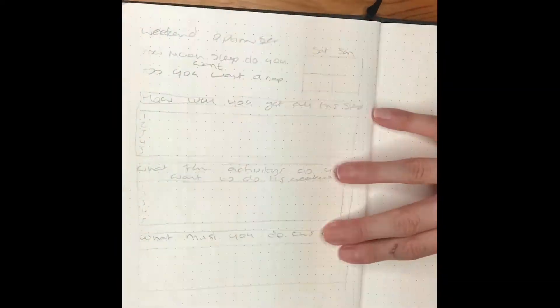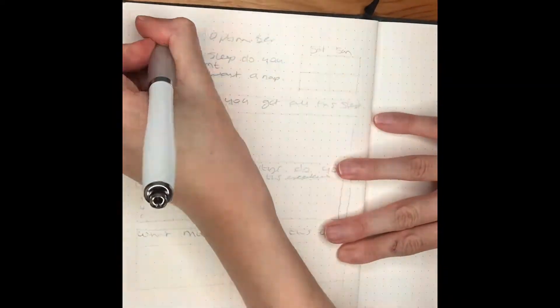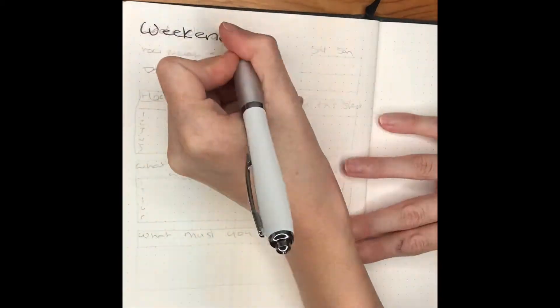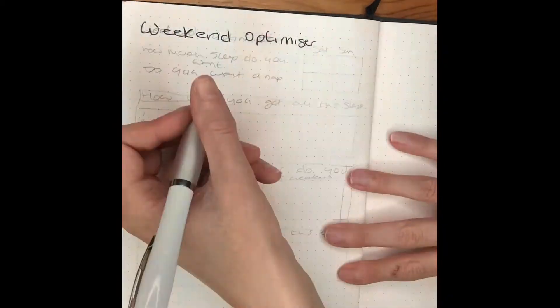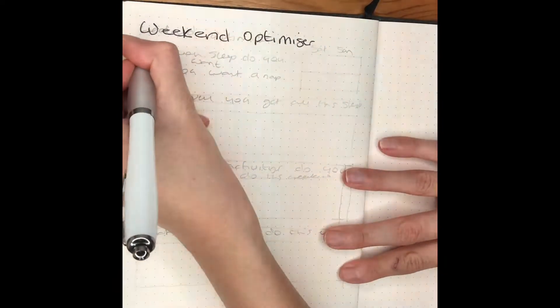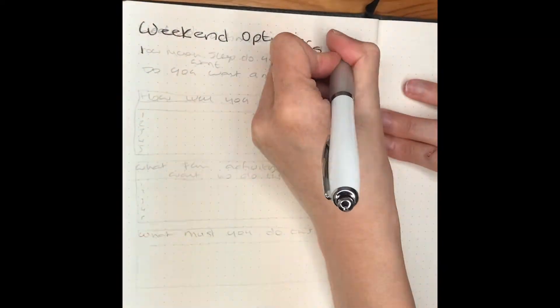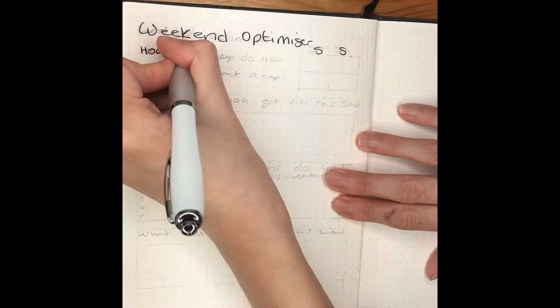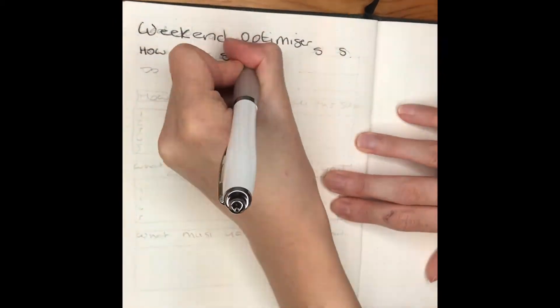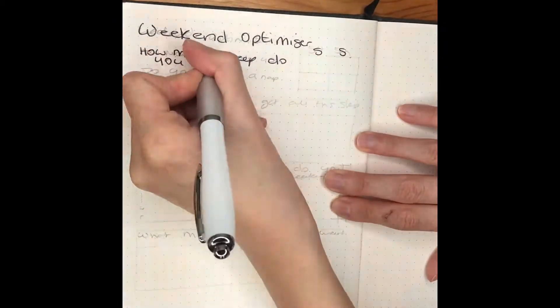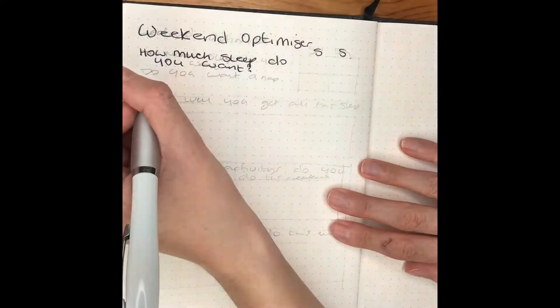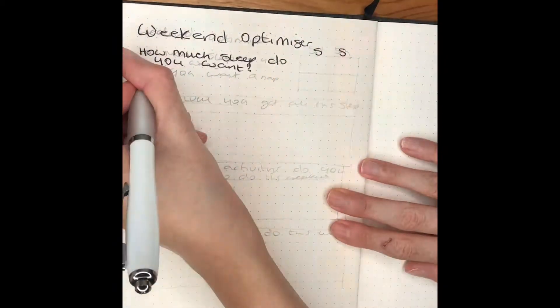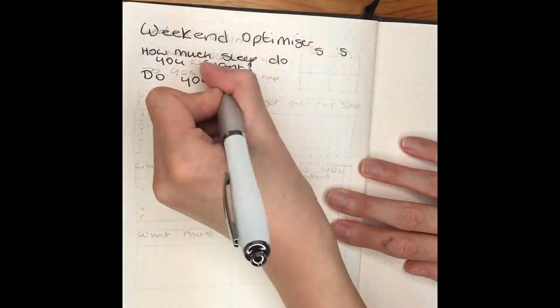This is also from the same bullet journal thing. It's called the weekend optimizer. I think I'm gonna get rid of this top bit, but I thought I'd try it out anyway. It's really the bottom half of this page that I really thought would be good. At the top it says how much do you want to sleep and would you also like a nap. I love to have a nap on the weekend. I thought this was a good way to measure out how much I was sleeping, how much I wanted to, and how much I actually did.